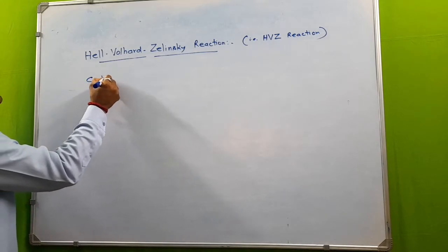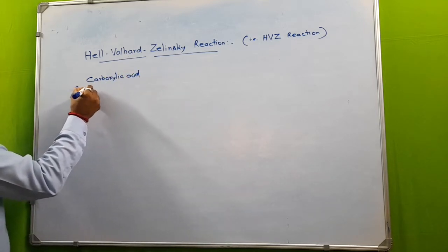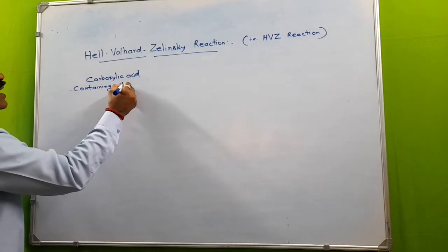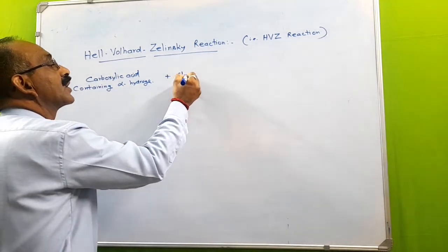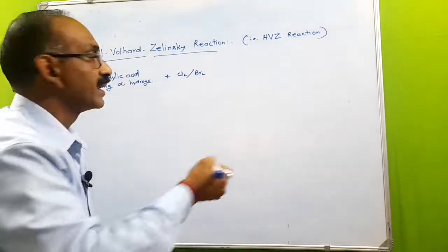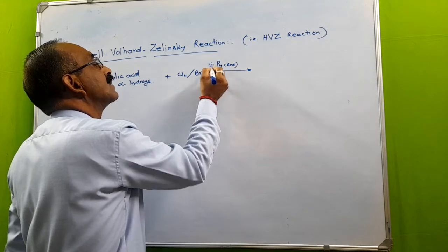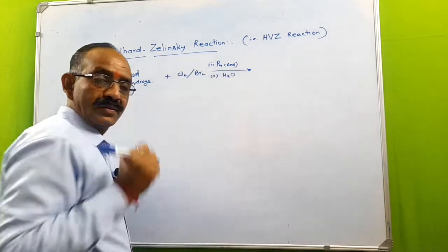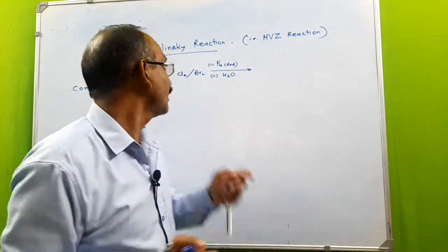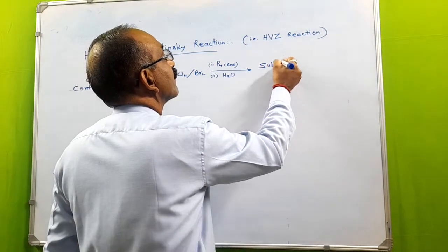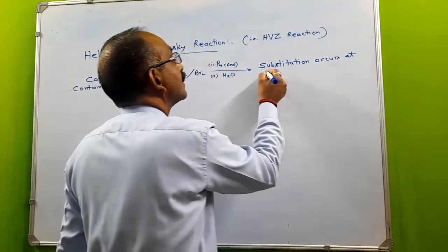Any carboxylic acid containing alpha-hydrogen is treated with chlorine or bromine in the presence of red phosphorus and water. As a result, a substitution occurs at the alpha position — the alpha-hydrogen gets replaced by the halogen.